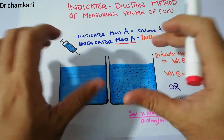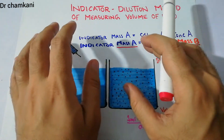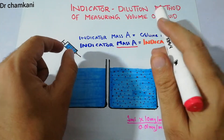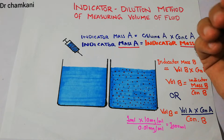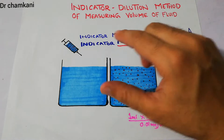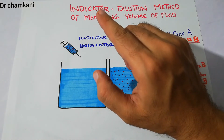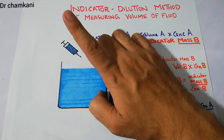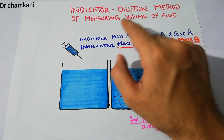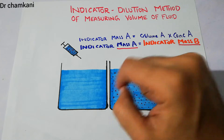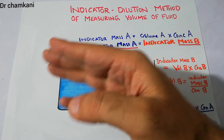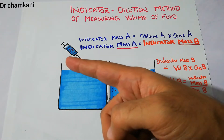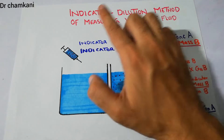With this simple method we can determine the volume of any fluid. We simply need to put some indicator and then measure its concentration after being put into a fluid. This is known as the indicator dilution because the indicator or the dye gets diluted into the fluid. We take an indicator, put it into the fluid we want to measure, and that indicator gets diluted — that's why it is called the indicator dilution method.